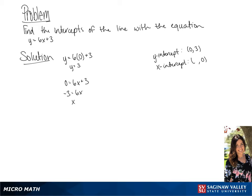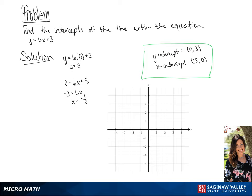If we subtract 3 from each side and then divide both sides by 6, we come up with x equals negative one-half. So our x-intercept is negative one-half, 0.